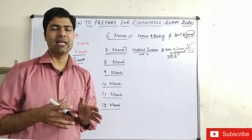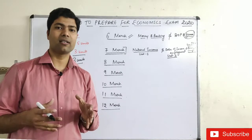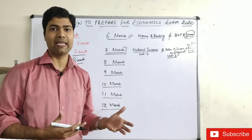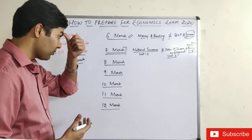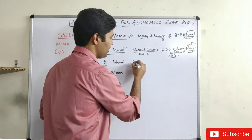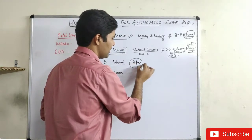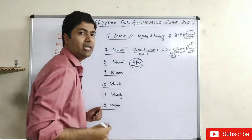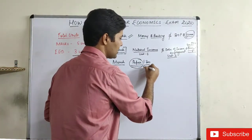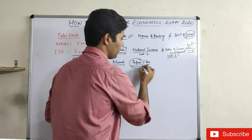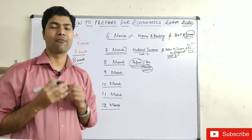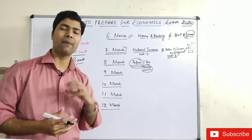IED is something that deserves more time this year. On 8th March, you have to complete one sample paper — give it 3 hours. Solve a macro paper so that you know where you actually stand in macroeconomics and identify the points where you are lagging behind.